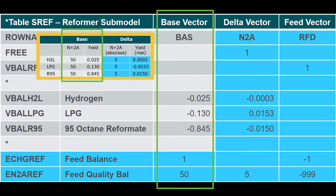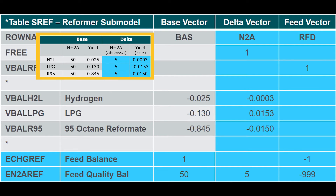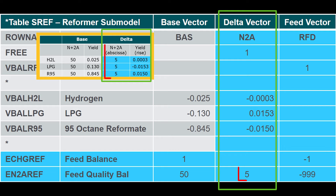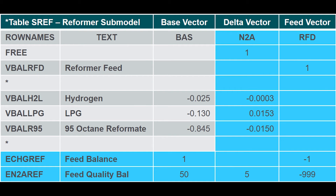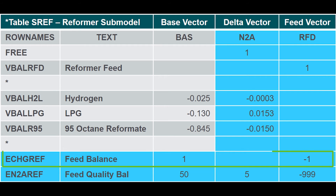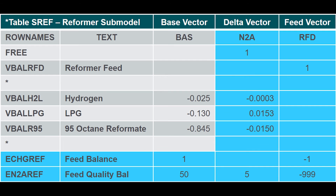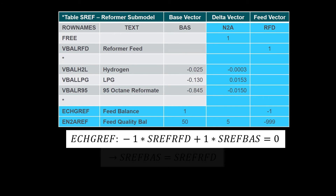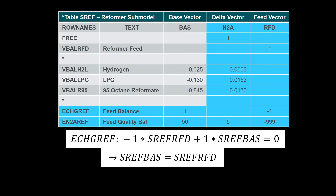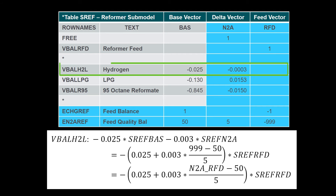The yield fraction coefficients at the base value are entered in the base vector column in corresponding material balance rows. The delta vector coefficients in column N2A represent the amount of yield adjustment when the feed quality changes — these are the yield adjustment coefficients corresponding to a feed N plus 2A change of 5. These calculated yield fraction coefficients are then entered under the delta column. Then we need to enter E rows to set up the correlations between the base vector, the delta vector, and the feed vector. This E row drives the yields for the actual feed rate. Let's look at hydrogen — you can see it has a term for the base vector and then a term for the delta vector. Feel free to pause here and study.